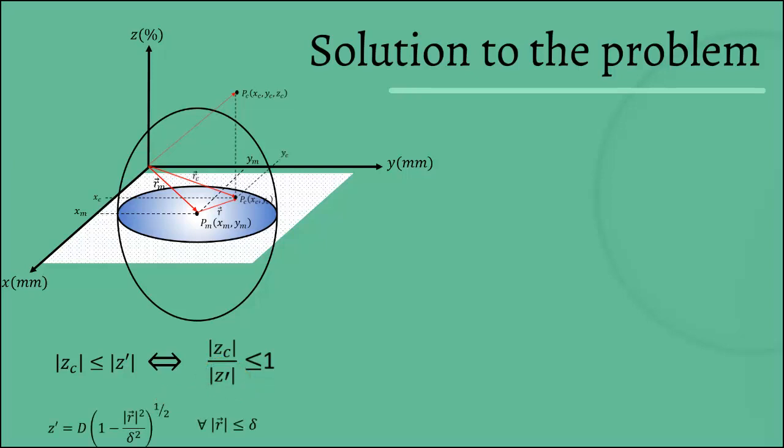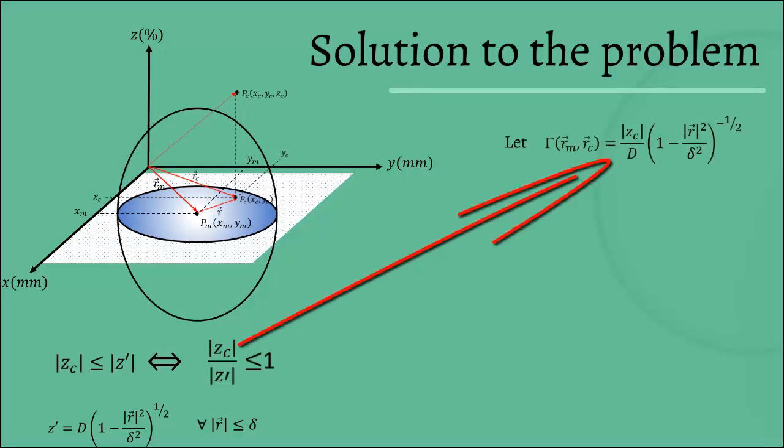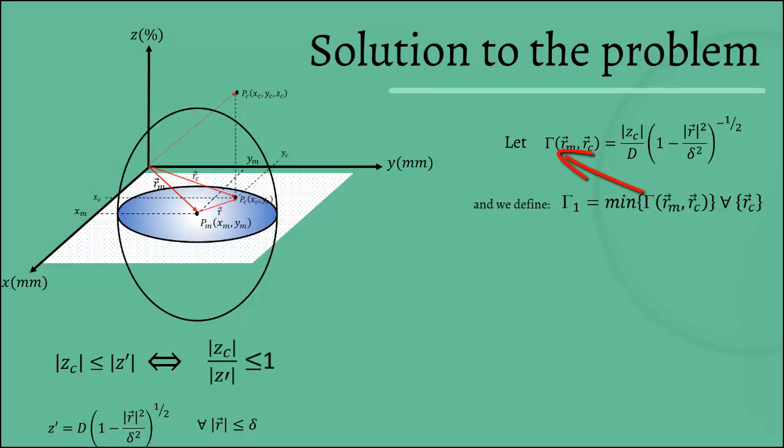We define the gamma uppercase function as the quotient of the absolute value of ZC over the absolute value of Z prime. We define the function gamma uppercase 1 as the minimum of the function gamma uppercase for every position vector of the coordinate points calculated by the system planning. If gamma uppercase 1 is less than or equal to 1, then we generate PI which would be 1, and in any other case PI would be equal to 0.